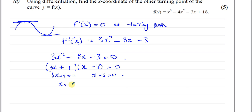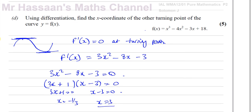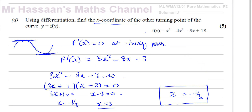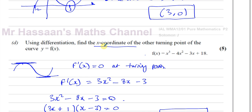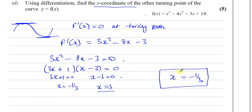So either 3x plus 1 equals 0 or x minus 3 equals 0, giving x equals minus one-third and x equals 3 as the two turning points. We already know x equals 3 from part C. Part D asks for the x-coordinate of the other turning point only — not the y-coordinate — so the answer is x equals minus one-third.